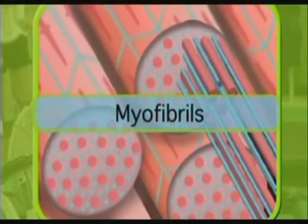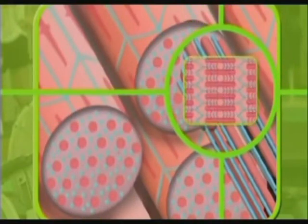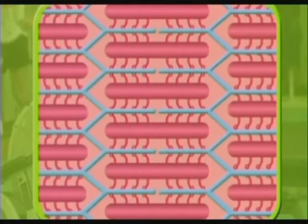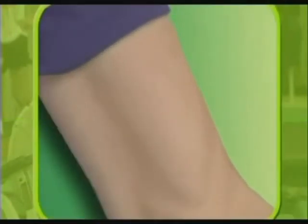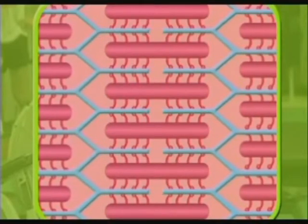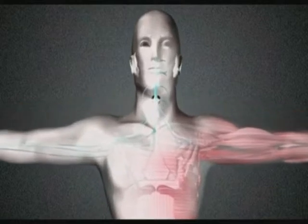A myofibril is a series of filaments joined end-to-end. When stimulated, the filament slides into itself, shortening the length. When thousands of filaments shorten simultaneously, they produce the powerful contraction of the muscle. When the stimulus is removed, the filament slides out again to its original length, relaxing the muscle. The stimulus to contract is transmitted from the brain to the muscle by the nervous system in the form of an electrical impulse.